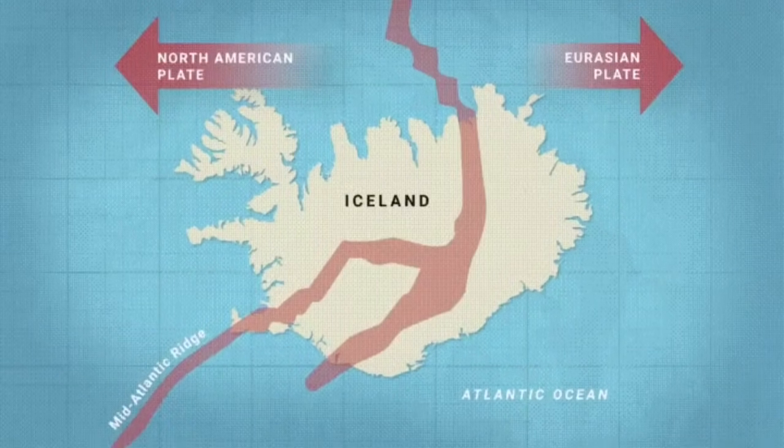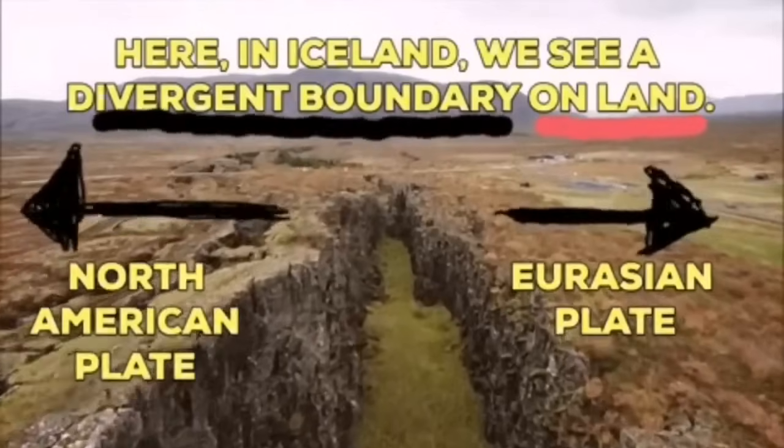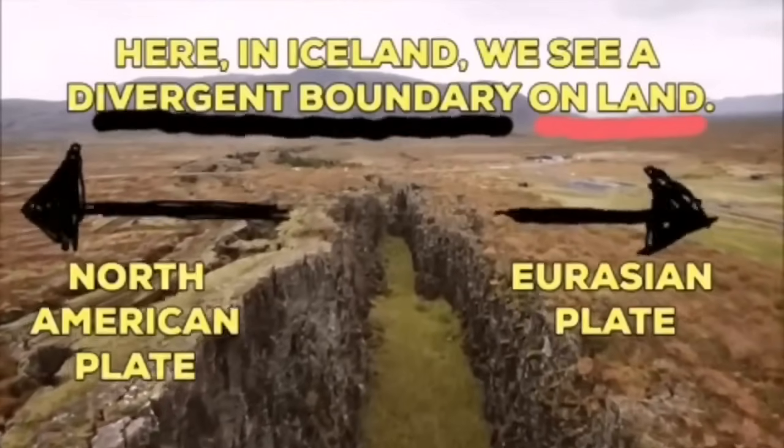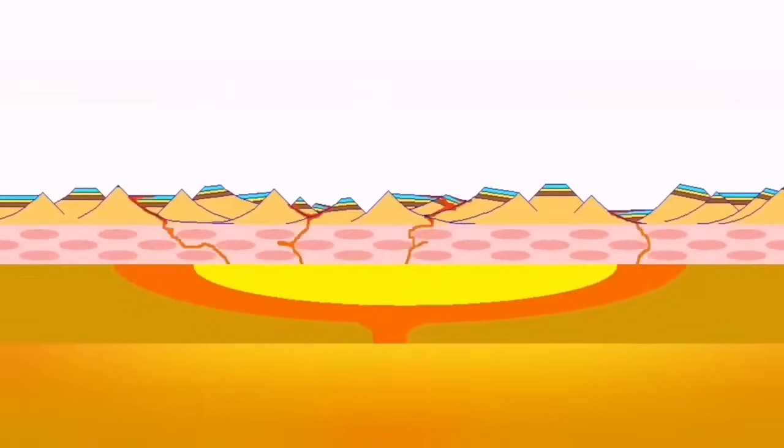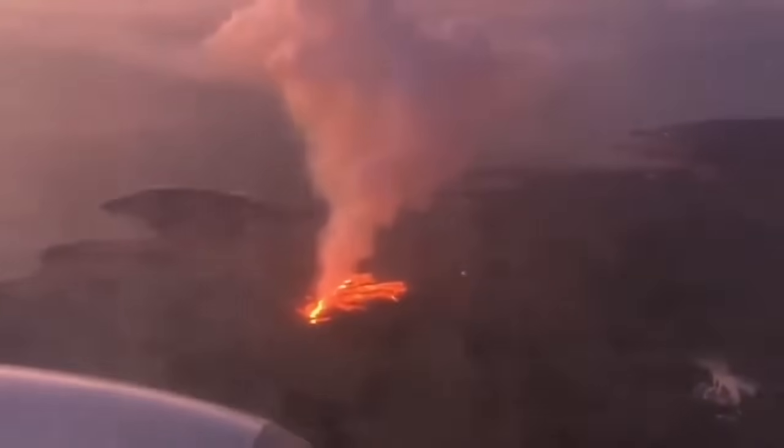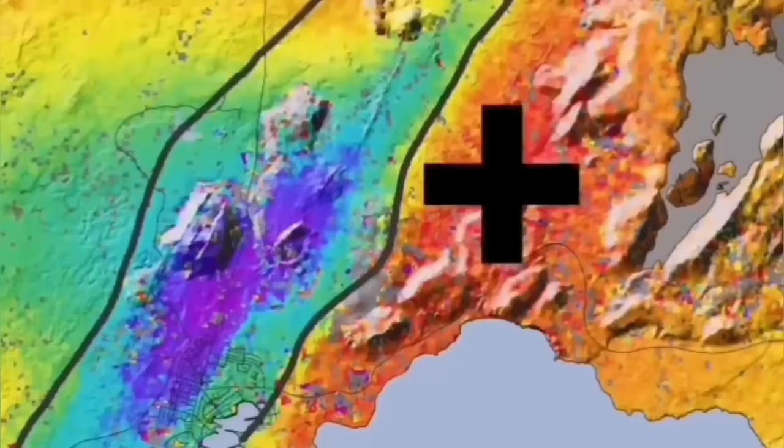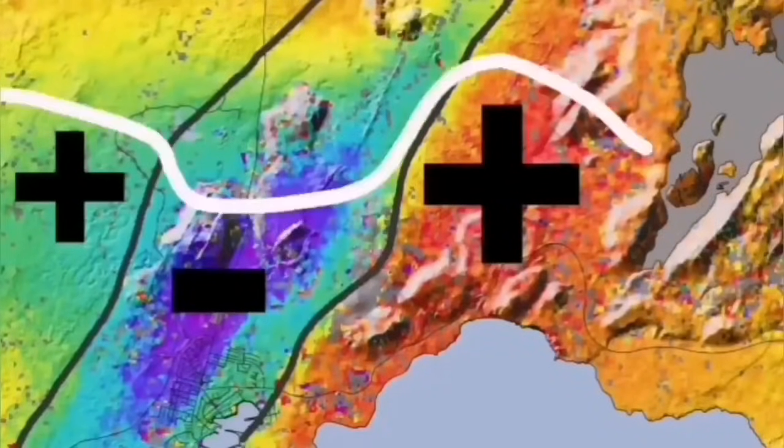Such a thing happens in Iceland, on the land, we can see it. Eurasian plate and North American plate, through these grabens, this is the hollow that you see in the middle, are separating. And through them, the magma forms and rises and creates lava, eruption of the volcano, this is what we call it.